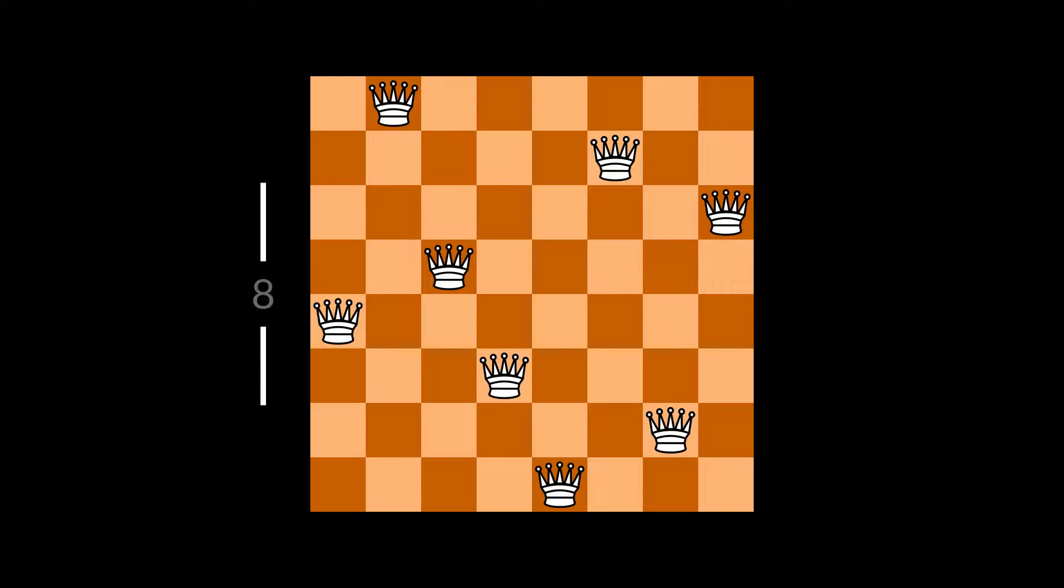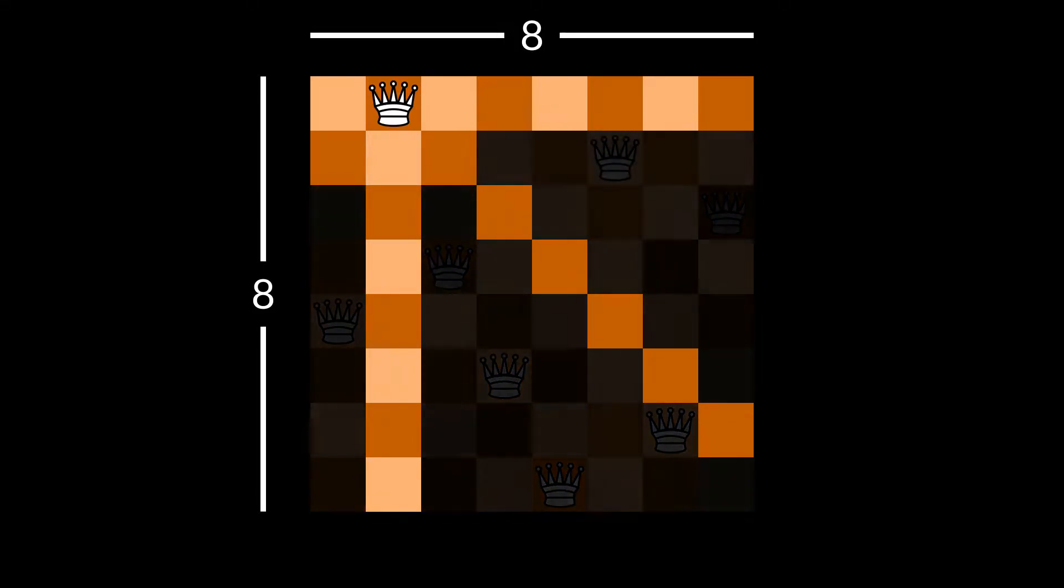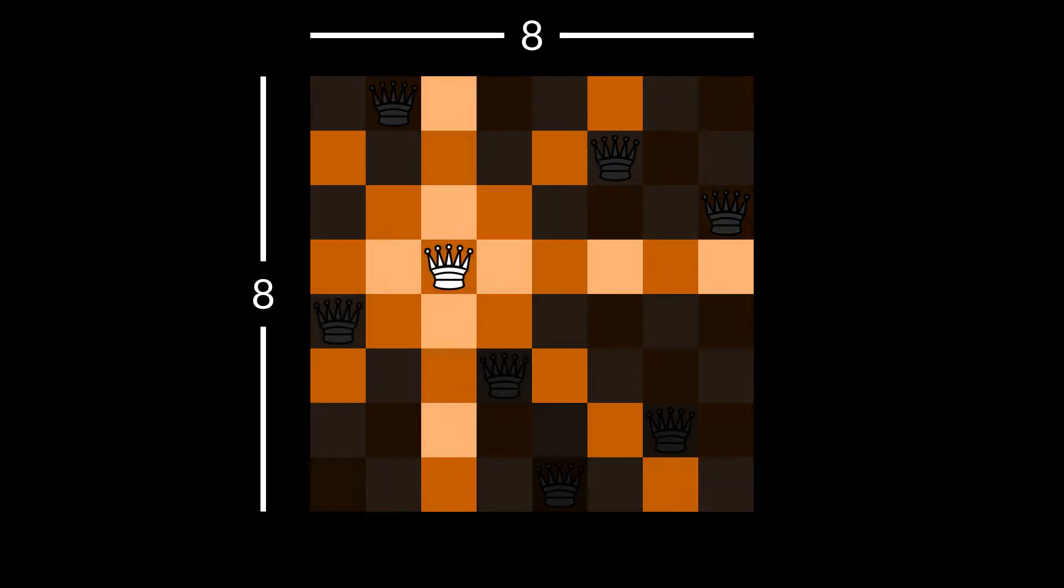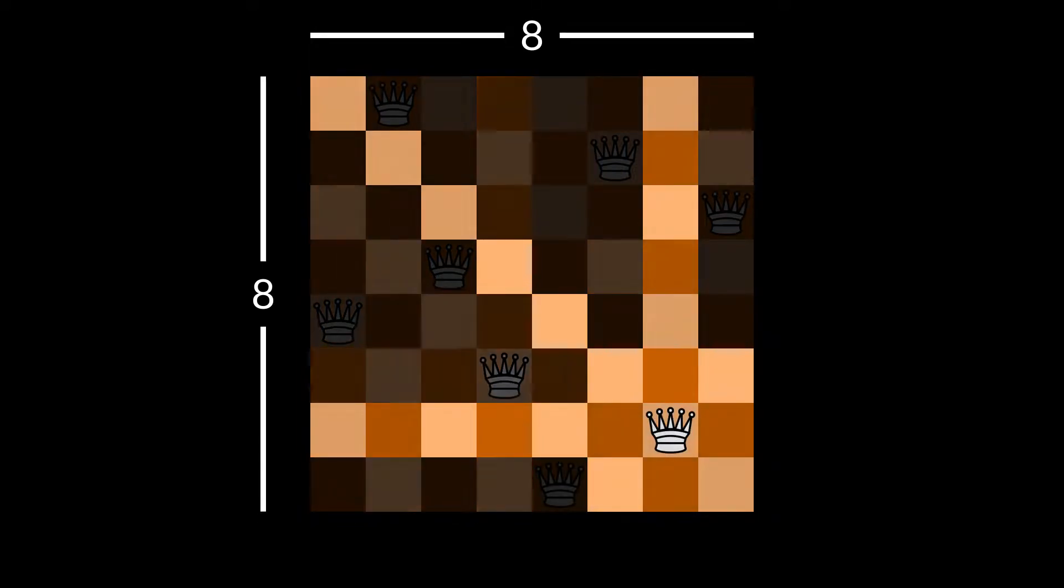In this case we have a standard 8 by 8 chessboard, so we have to place 8 queens. What you see here is actually a solution to the 8-queens problem because no queens can attack each other.